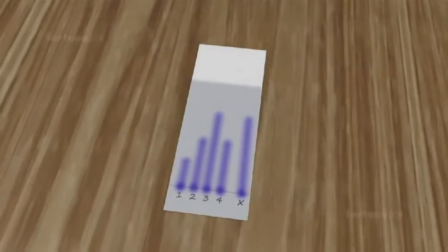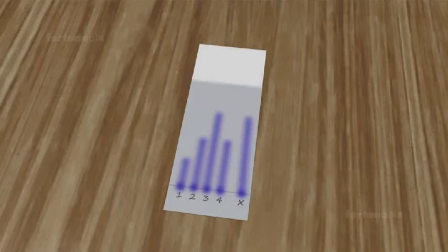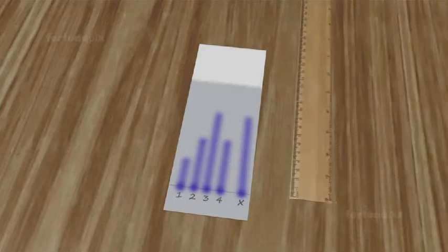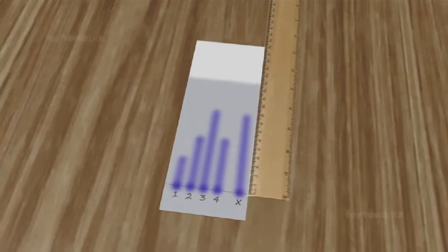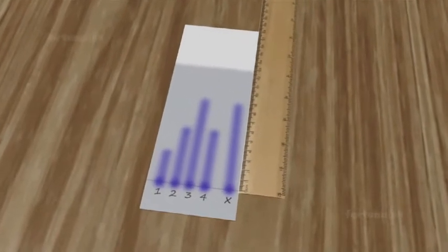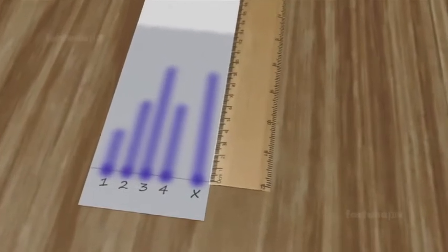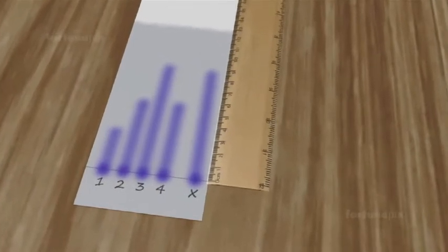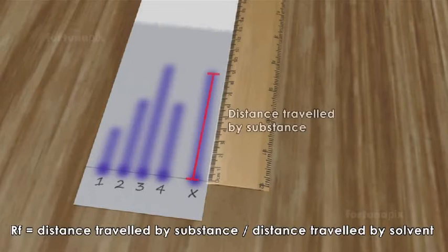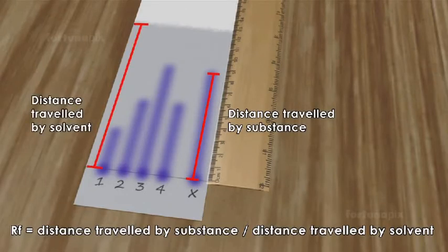The location of the ink dots will reveal which of the four pens has the same ink as the one used to create the paper writing sample. The distance traveled by the substance relative to the solvent is a constant for a particular compound. It can be found by using the formula: RF equals distance traveled by substance divided by distance traveled by solvent.